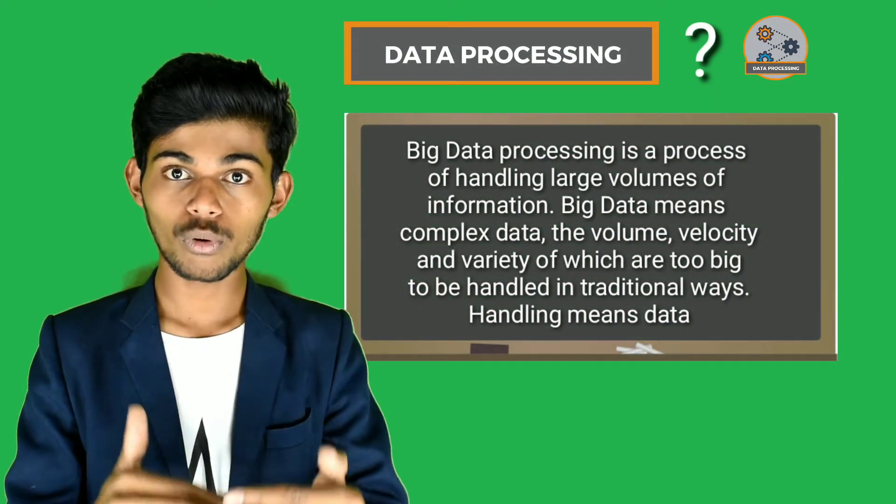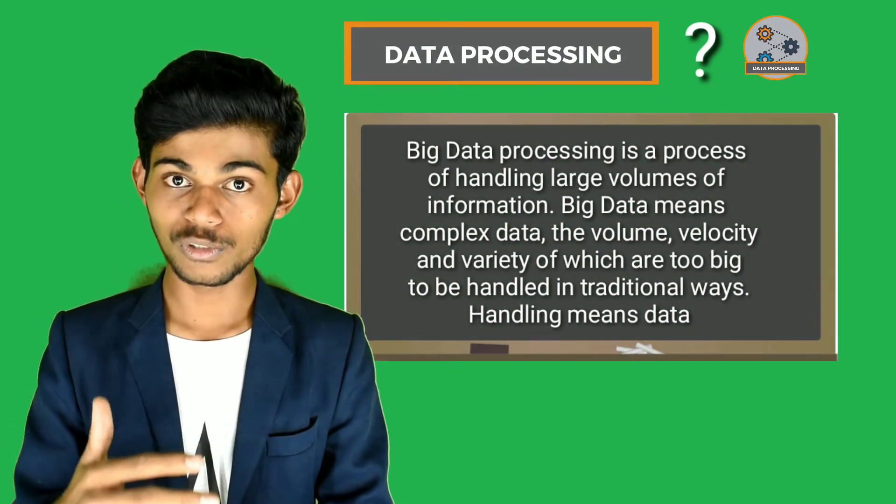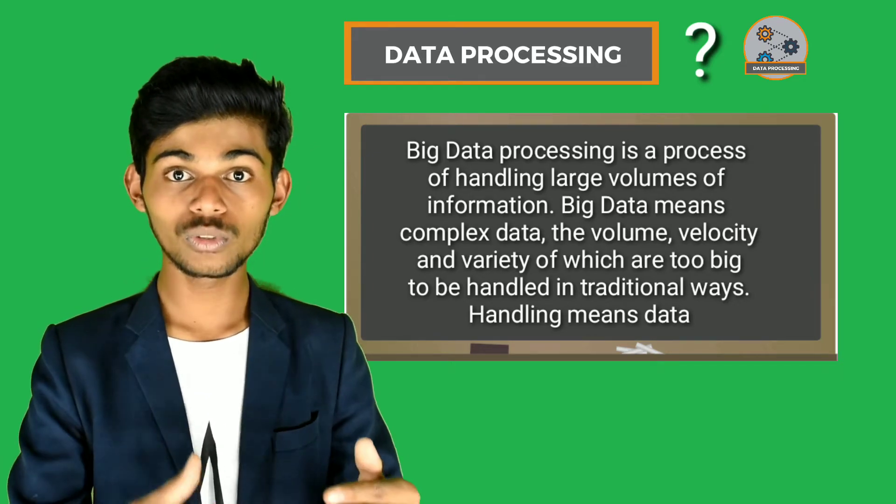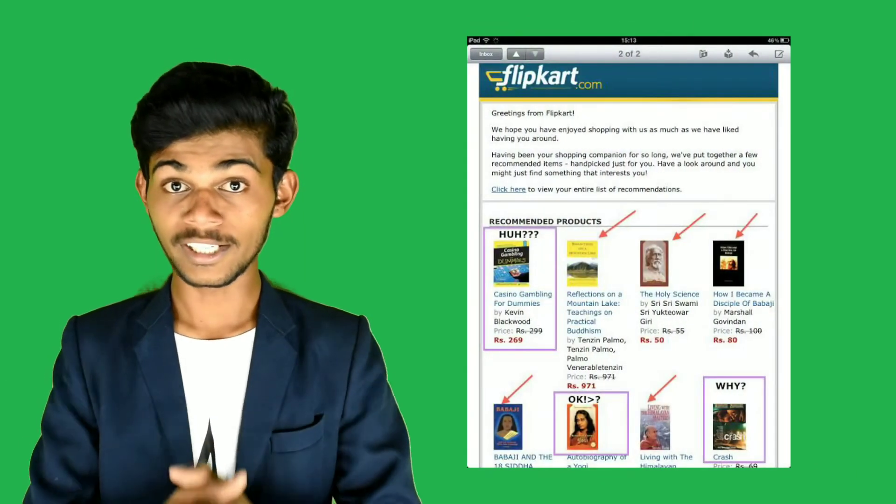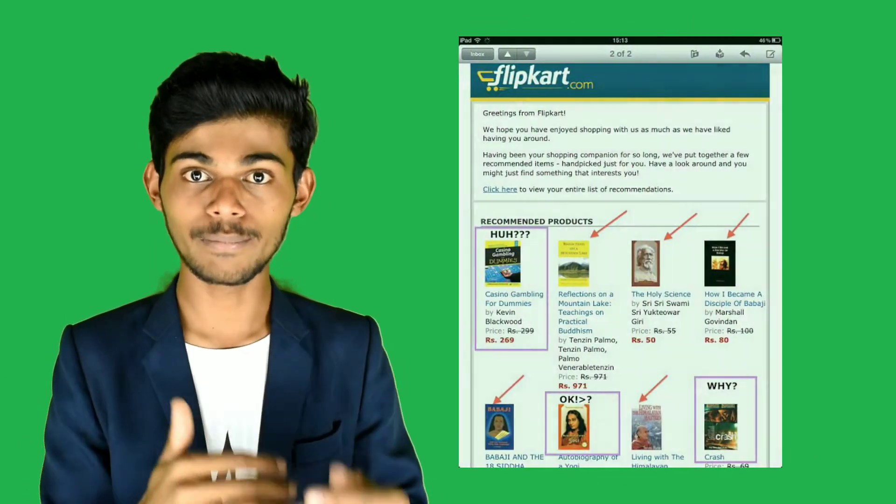And next, data processing. Data processing stores the huge amount of data and processes the useful data, and shows us the relevant ads like in Google News Feed and Flipkart and Amazon, which recommend you your interest-based products. We hope you understand something about big data. Thank you.